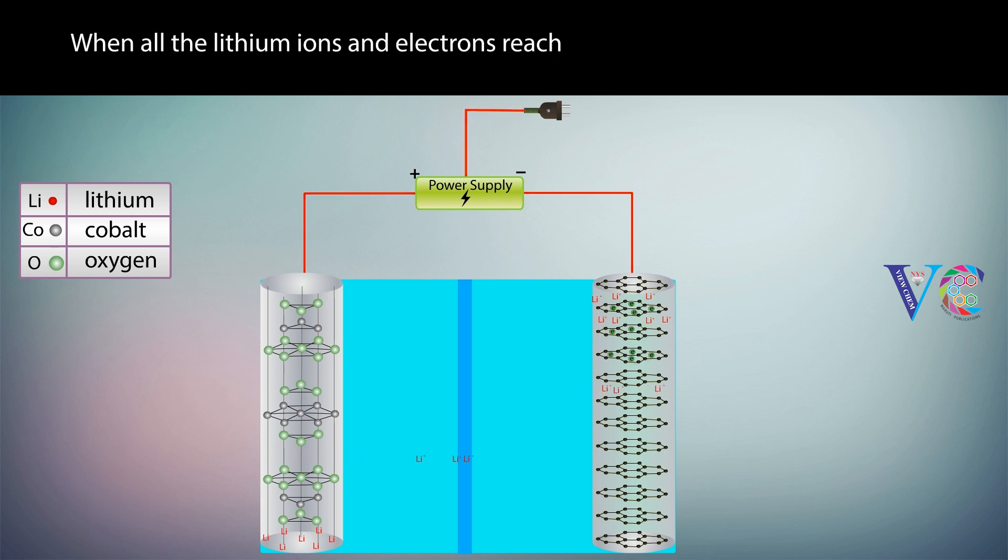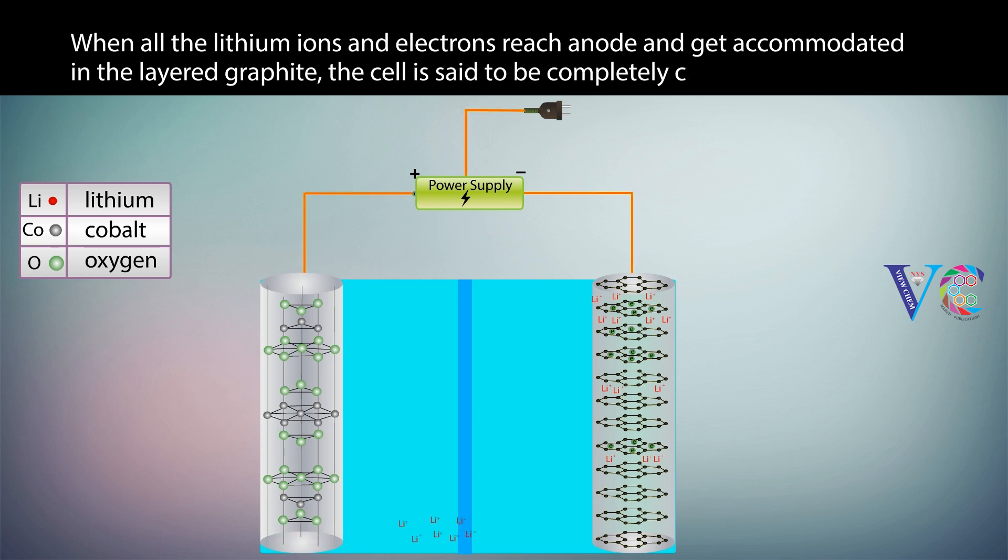When all the lithium ions and electrons reach anode and get accommodated in the layered graphite, the cell is said to be completely charged.